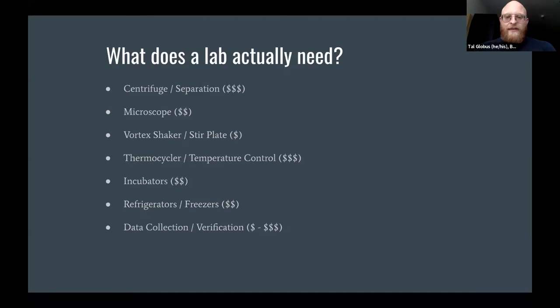What does a lab actually need? A lab needs centrifuges and other sorts of separation equipment, which tend to be enormously expensive. Microscopes, reasonably expensive. Vortex shakers and stir plates, a little expensive, also not entirely necessary. Thermocyclers, basically devices for temperature control in general, very expensive. Incubators, reasonably expensive. Refrigerators and freezers, reasonably expensive. Data collection is a broad category, essentially lumping sensors as well as data collection equipment and various assays. The price varies significantly.